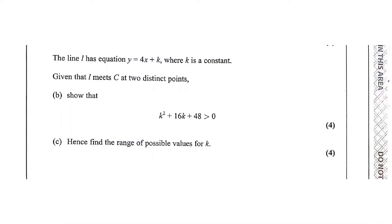Part B: the line l has equation y = 4x + k where k is a constant. The line l meets C at 2 distinct points. Show that k squared plus 16k plus 48 is greater than 0. This question has 4 marks. Part C: find the range of possible values of k, which also carries 4 marks.